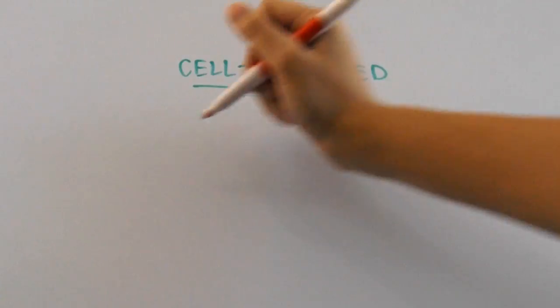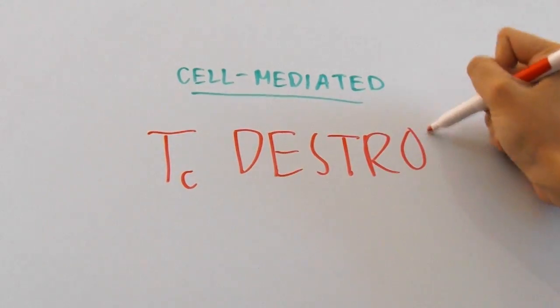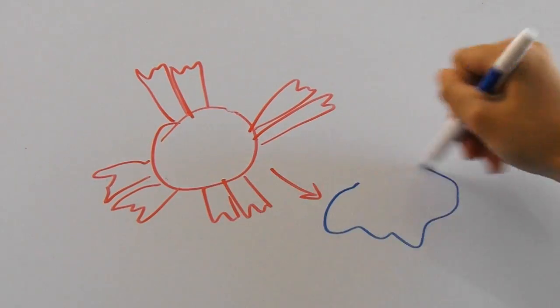In the cell-mediated response, cytotoxic T cells are activated to destroy target cells. These cytotoxic T cells are effector cells that target pathogens through direct secretion of proteins that cause cell rupture and death.